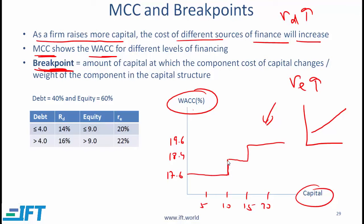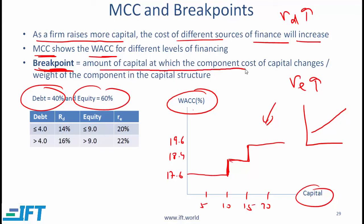In our example, the two break points are 10 and 15. The formula for a break point is: amount of capital at which the component cost changes, divided by the weight of that component in the capital structure. For the debt component, the cost of debt changes at $4 million, and the weight of debt is 0.4. So 4 ÷ 0.4 = 10 — that is where the cost of capital first jumps up.